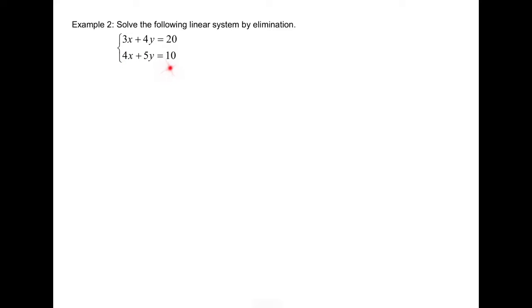Example 2. As you can see, the equations are already lined up, except the coefficients of the variables are not the same. For the x-term it's 3 and 4, and for the y-term it's 4 and 5. So our first step is to make one of the variables have the same coefficient. I've decided to make the coefficient of the x-term the same. The common multiple between 3 and 4 is 12, so equation 1 has to be multiplied by 4. Every single term must be multiplied by 4, giving us 12x plus 16y equals 80.